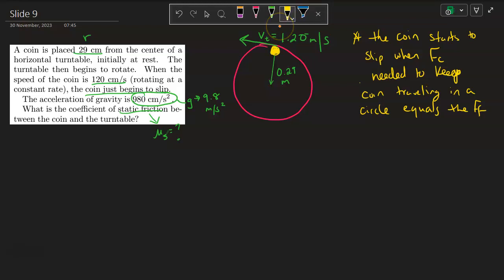And the direction the coin flies off is in a straight line along the tangential velocity vector. So it'll go sideways off the spinning table.